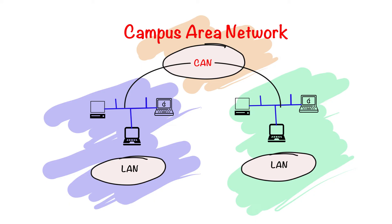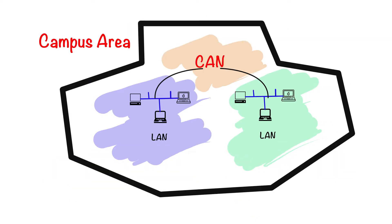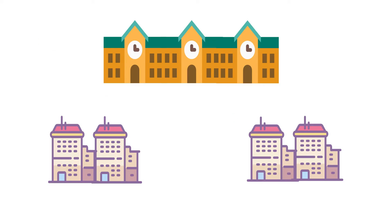The campus area network is basically the combination of local area networks, and it is located under a limited geographical location. Colleges and universities are good examples of a campus area network because in this particular network you have multiple buildings in the campus, and you connect all these buildings together.